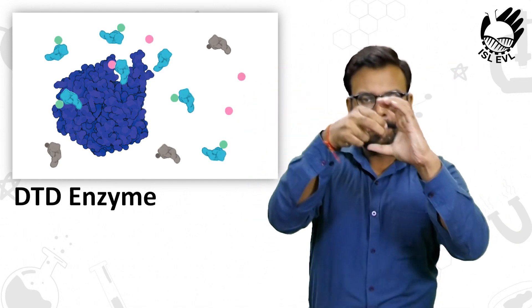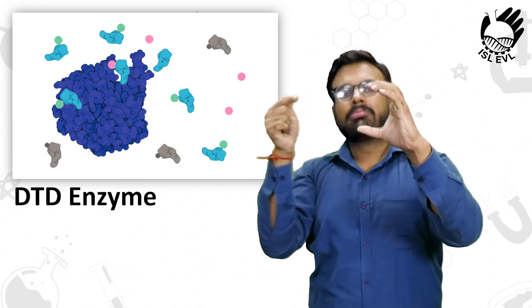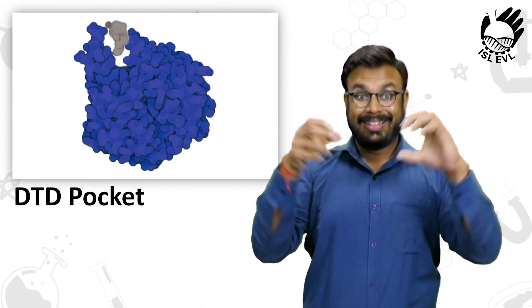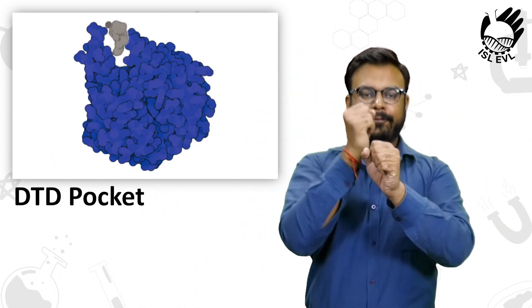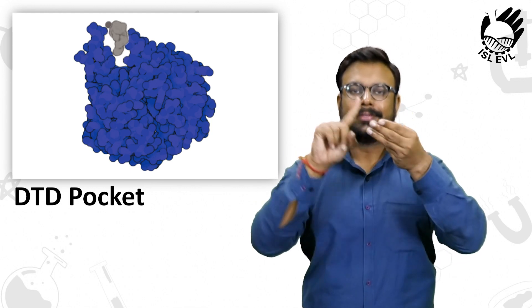Anything that fits this pocket gets cleaved, with an exception of amino acid-glycine-bound tRNA.